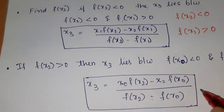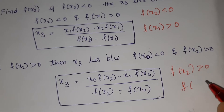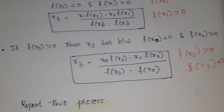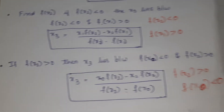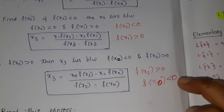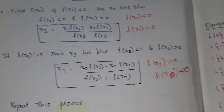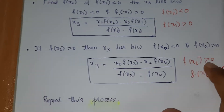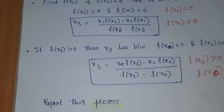If f(x2) > 0, then we have f(x0) < 0, so we take x0. If x2 is greater than 0, you take x0 which is less than 0. Then you need x0 and x2 to find x3. Repeat this process until you find the root, correct up to two or three decimal points.